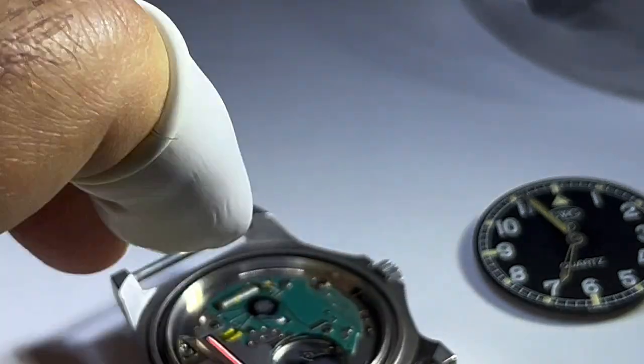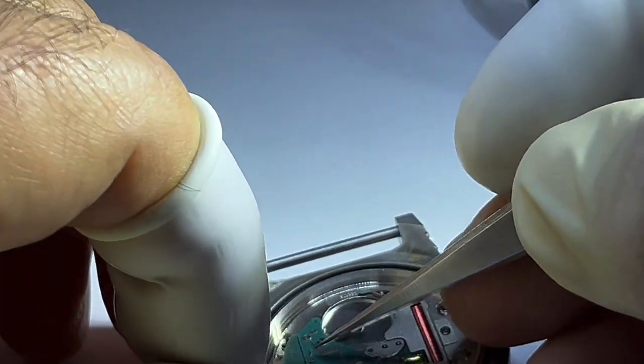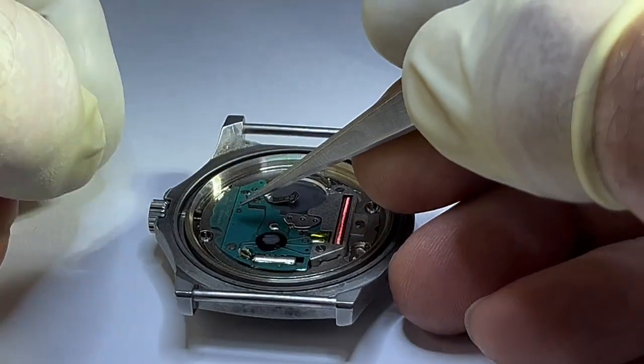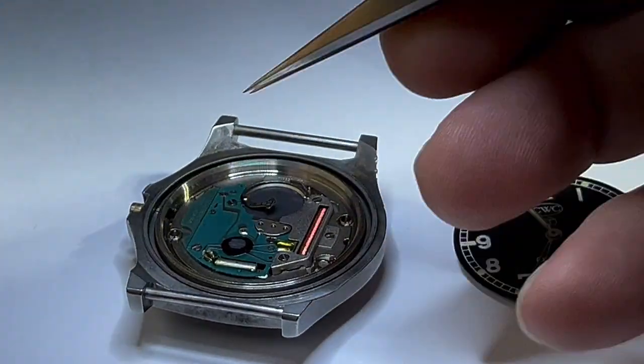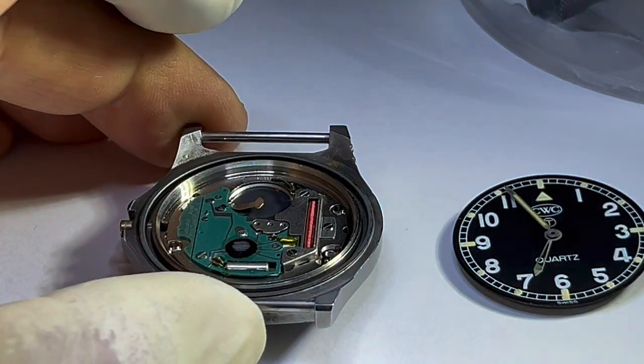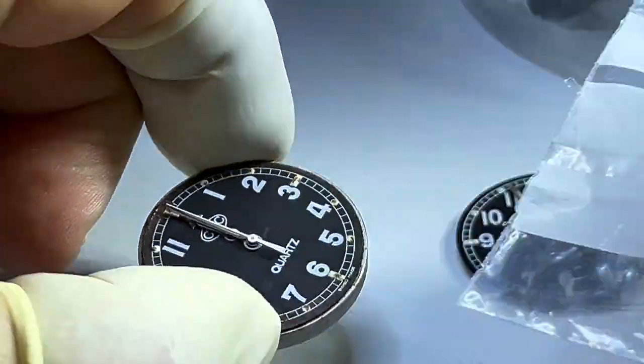So with the watch powered down and the hands set to 12, remove the stem and extract the watch from the case. Just one note of caution though: when you take the movement out of the case, be really careful how you handle it as the hands are very vulnerable and easy to damage.